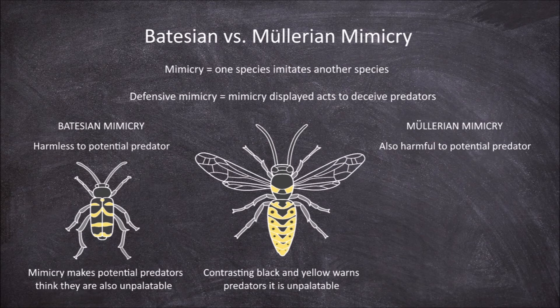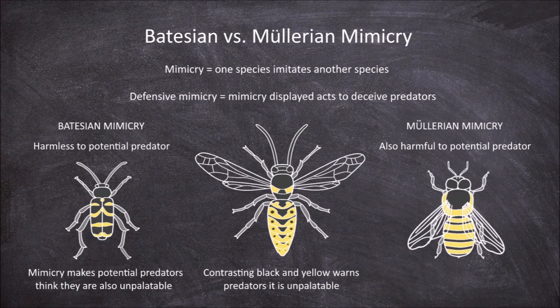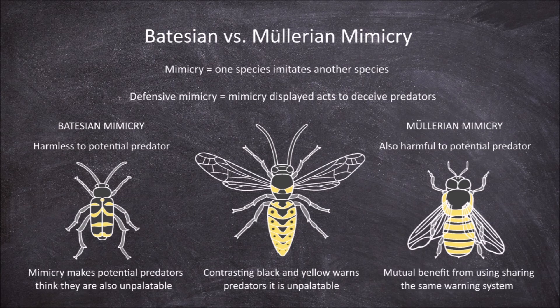The example we will use is the honeybee. The honeybee also shares the same contrasting yellow and black colouration like the wasp beetle, but the difference is that the bee also stings — it is also harmful and unpalatable. The wasp and bee both get a mutual benefit from sharing the same warning signal.